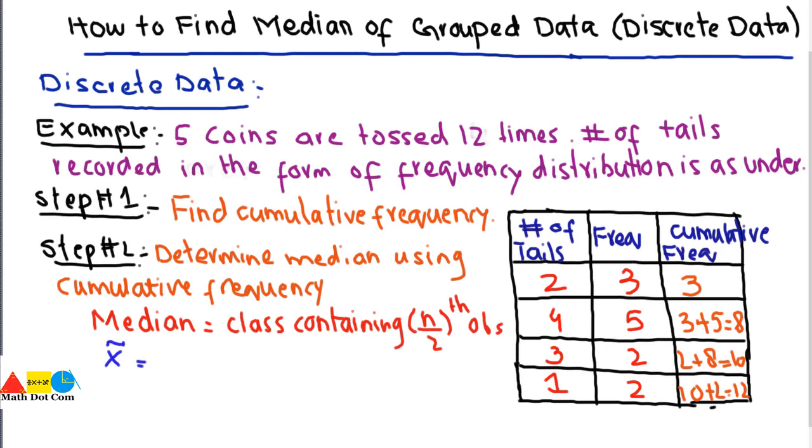Here the total frequency is 5 plus 3, which is 8, plus 2 is 10, plus 2 is 12. So it equals 12.